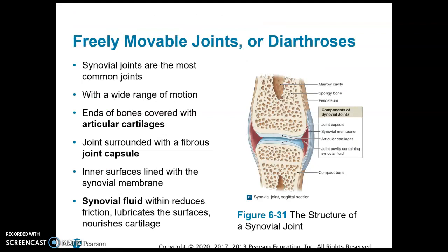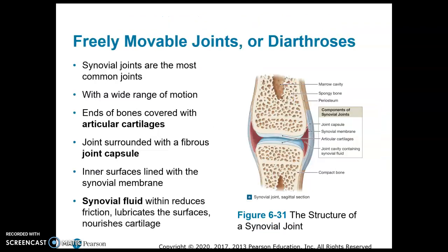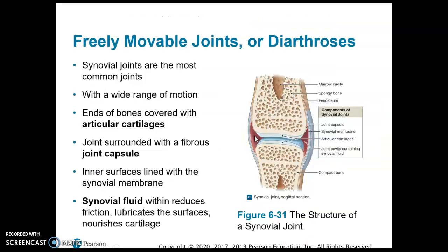Freely movable joints, or diarthrosis, are always synovial joints. Let's talk about the additional structures you might find in a synovial joint. At the ends of the bones in a synovial joint, we have articular cartilage, which we've talked about before. We also have a joint capsule.